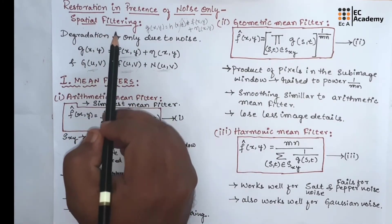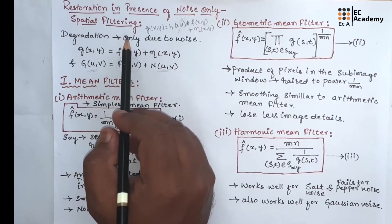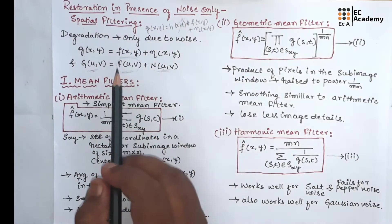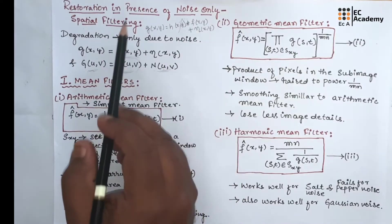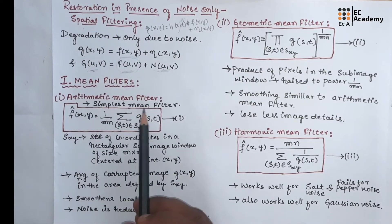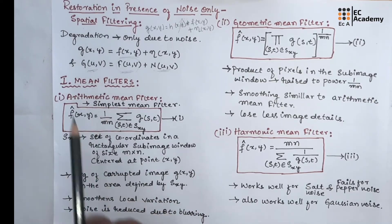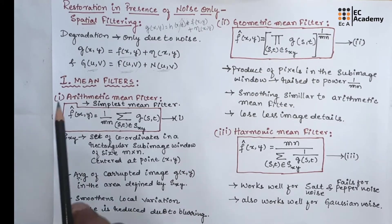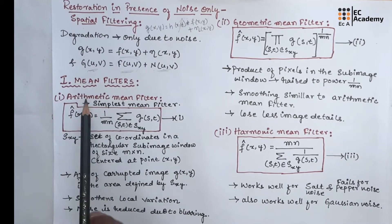Spatial filtering is the method that is used in the situation when only additive noise is present, which means if only noise is added to the image, at that case we will go with the spatial filtering. Here, there are two methods: first method is mean filters and the second method is order statistic filters. In this video, we will understand mean filters.